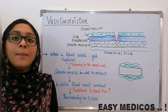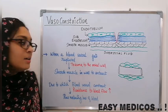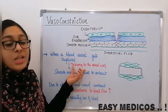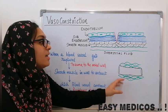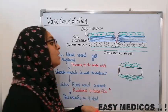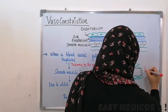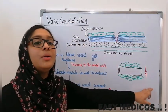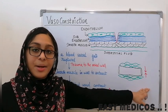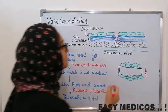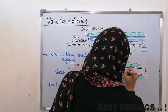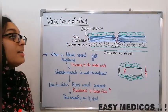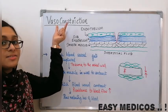This is the ruptured vessel. Upon this rupture, what happens? There is trauma to the wall of the vessel. Trauma to the wall causes the smooth muscles to contract. This blood vessel will constrict — that's how vasoconstriction comes.